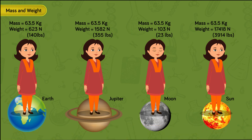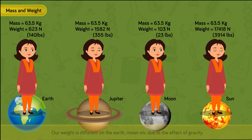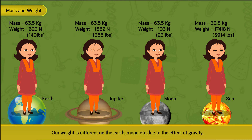As seen in the picture, weight is changing as we change the planet or satellite, but the mass remains the same. That means our weight is different on the earth, moon, etc., due to the effect of gravity.